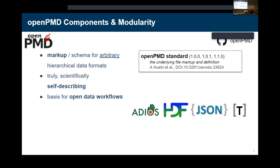They all use the same schema. We have implementations with ADIOS1 — which we needed on Titan — ADIOS2, and HDF5 as our main implementations. We also have smaller implementations for JSON and TOML, which helps us transport everything that's not binary data, just structure, and is easy to modify manually by people configuring instruments.